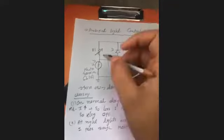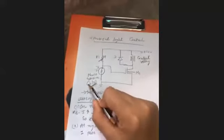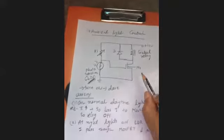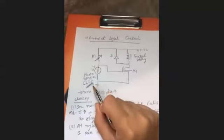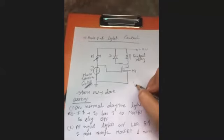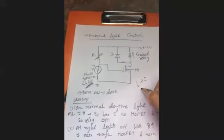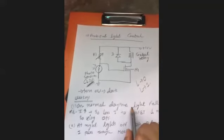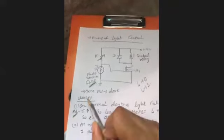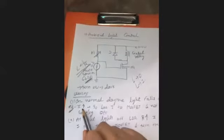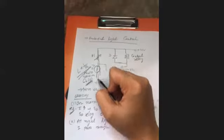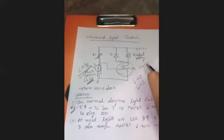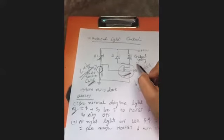Next is ambient light control using LDR — a Light Dependent Resistor. LDR resistance is inversely proportional to light. In daylight, resistance is high, so current is low, and a MOSFET cannot be turned on. When light is low, resistance decreases, current increases, and the MOSFET can be driven.